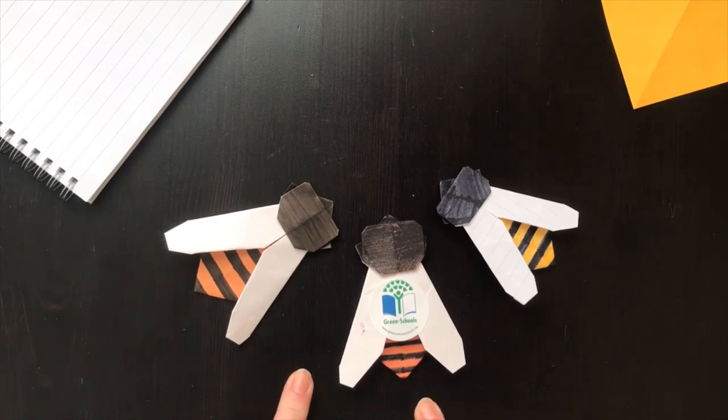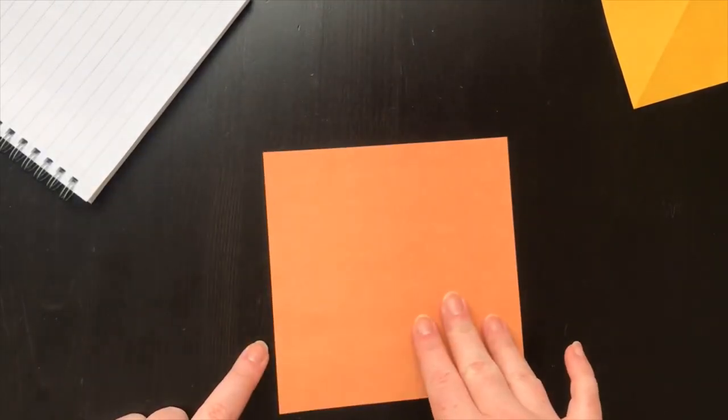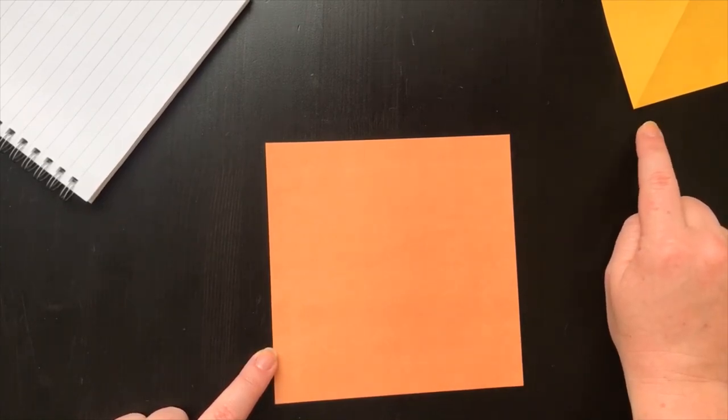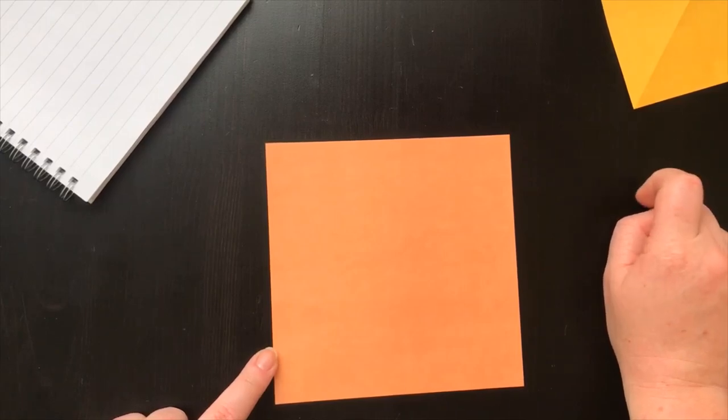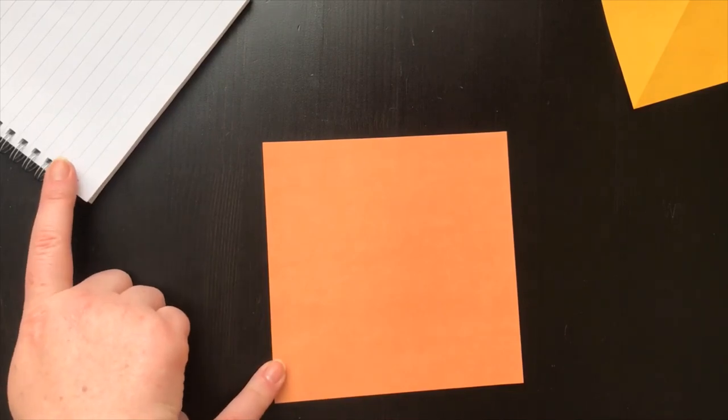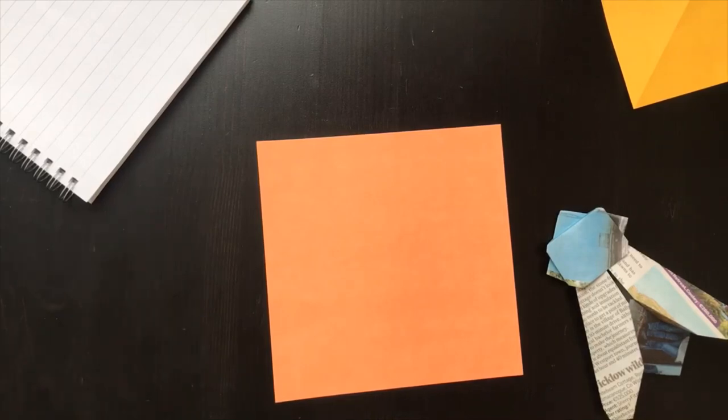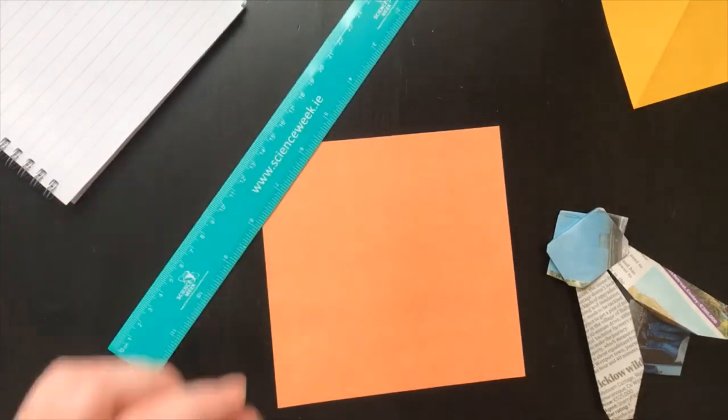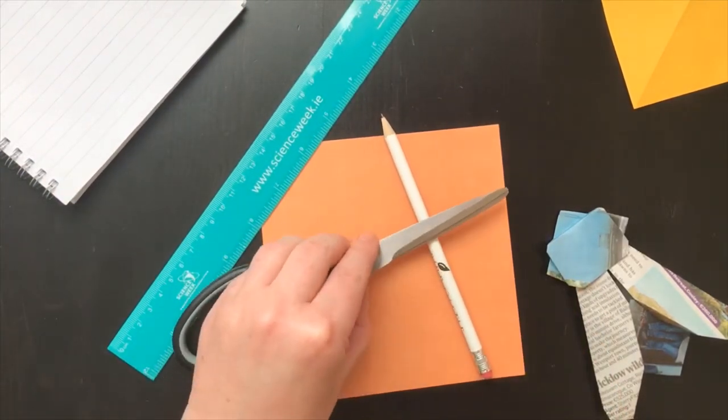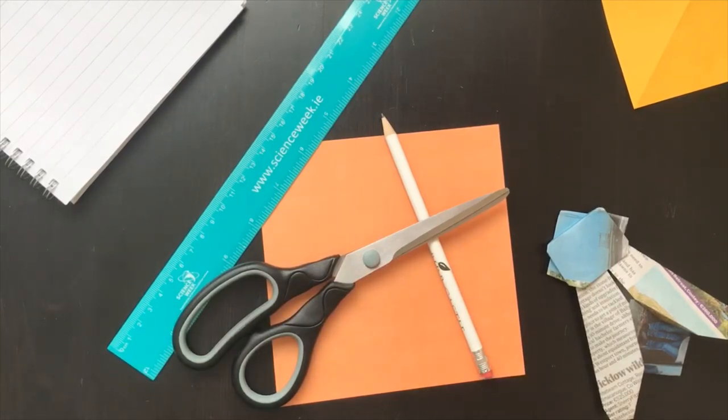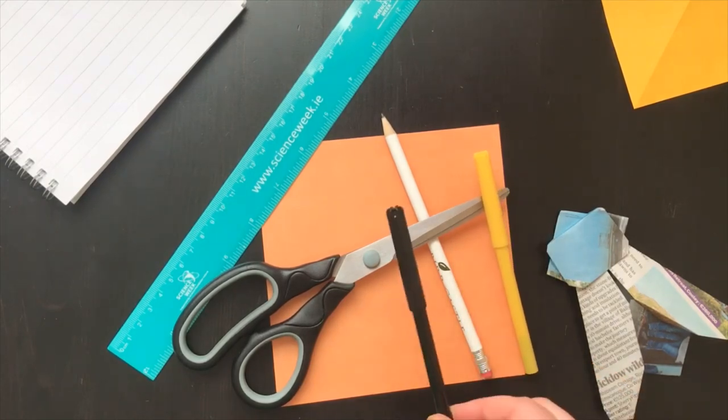What we're going to need for our bee origami is a square piece of paper. Ideally, this square piece of paper has a white side and a colored side. You might choose to use a yellow piece of paper, but if you don't have that feel free to choose whatever color you'd like. You might use an orange piece of paper, a copybook piece of paper, or even a newspaper. You get to choose what color bee you make today. Now, if you're starting with a square piece of paper, you're not going to need many extra items, but if you're making a square, some things you're going to need is a ruler, a pencil, and scissors. Whether you're starting with a square or a rectangle, you're also going to need a yellow and a black marker.